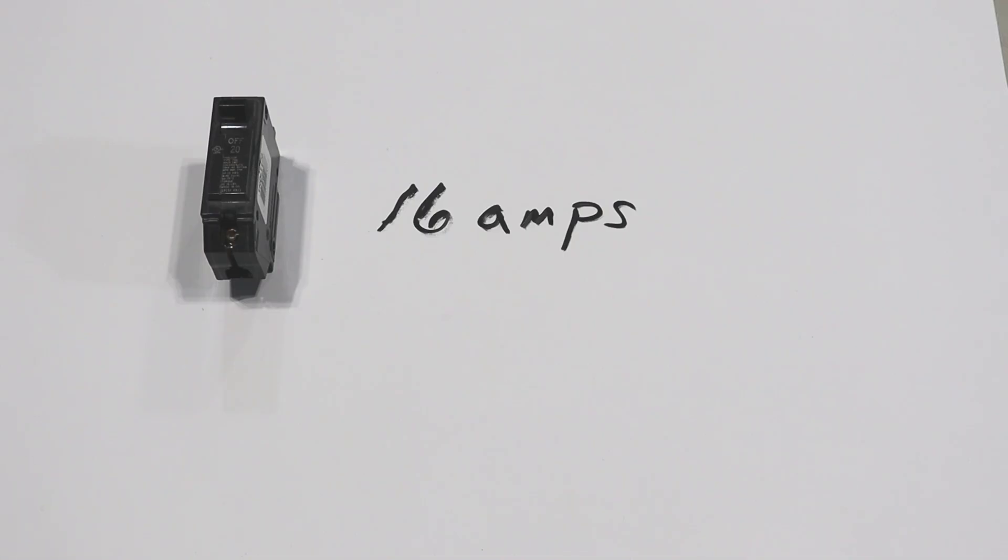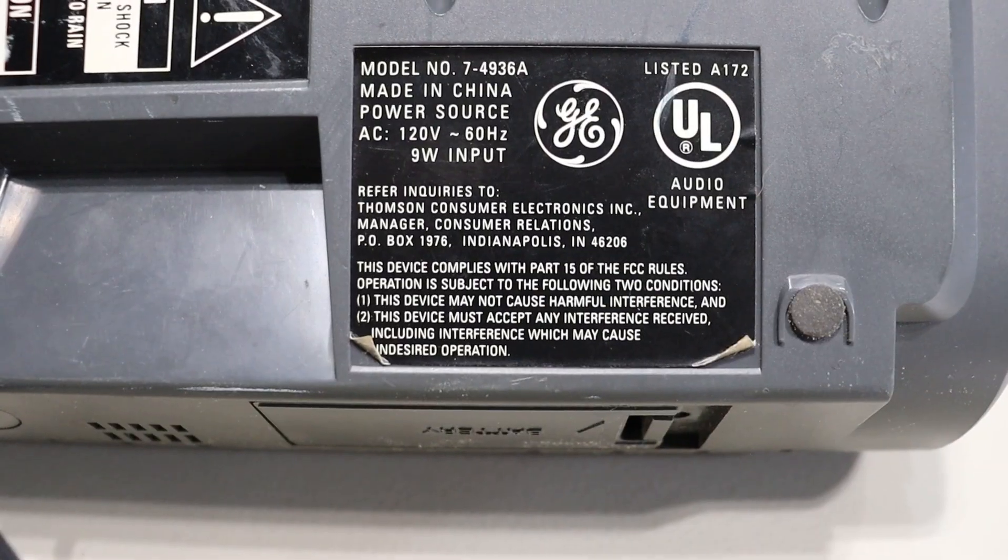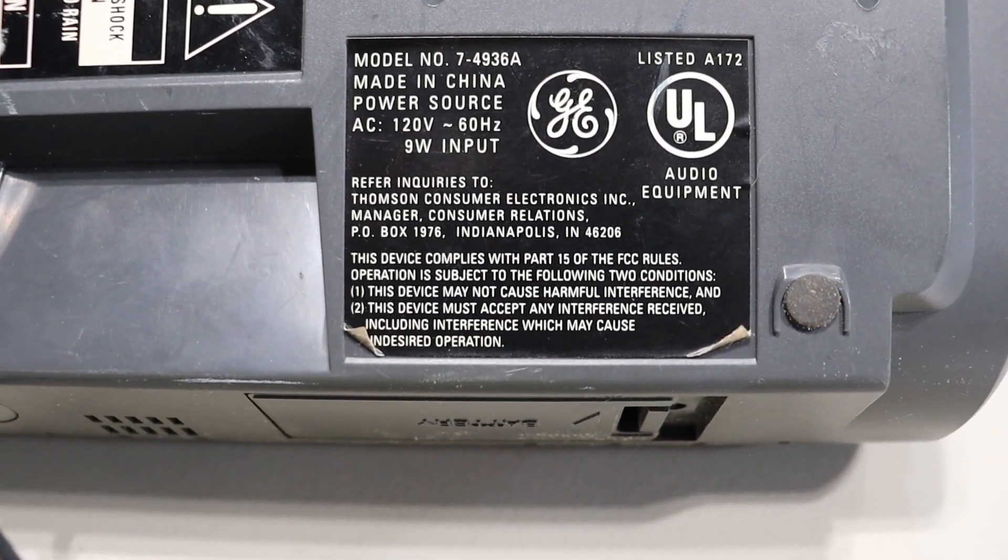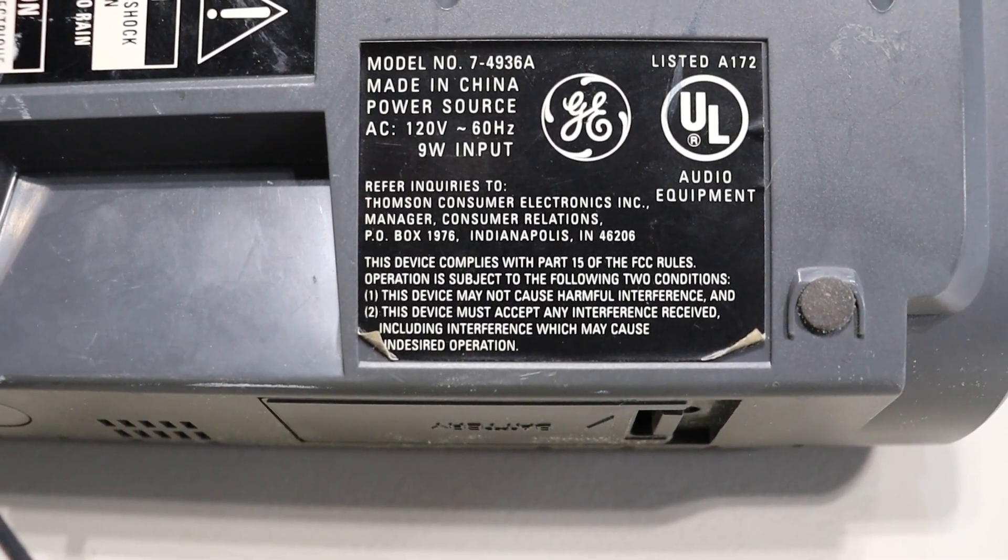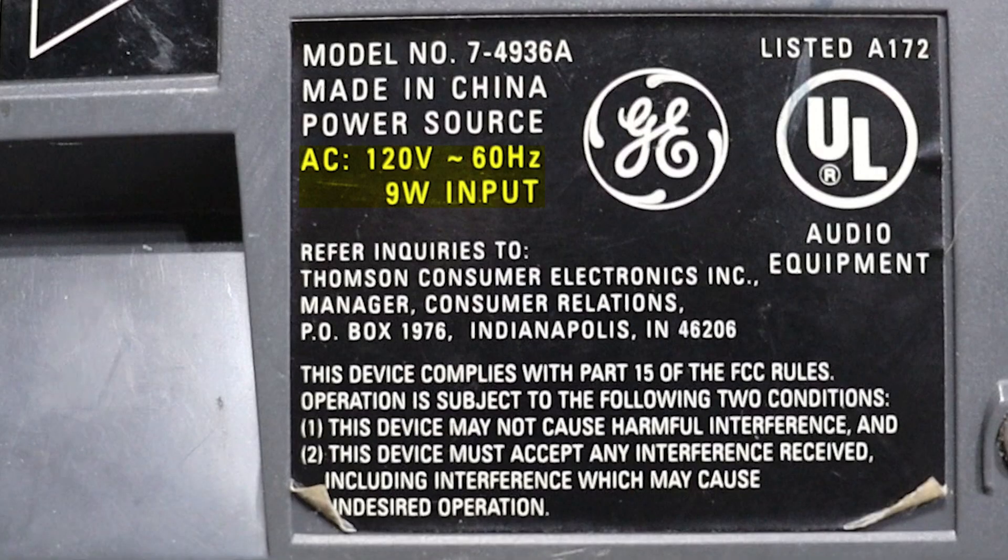The 16 amps may not mean anything to you if you can't get the information to determine how many amps each appliance uses. Where you can get the information is on a little tag on all of your appliances. For this little radio it says AC 120 volts and 9W stands for 9 watts. We need those two numbers, the 120 volts and the 9 watts.